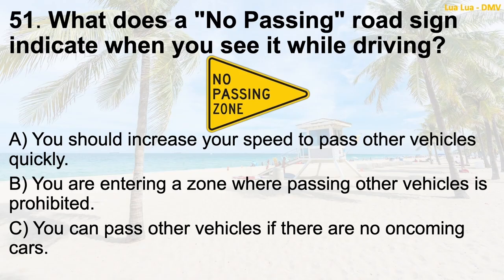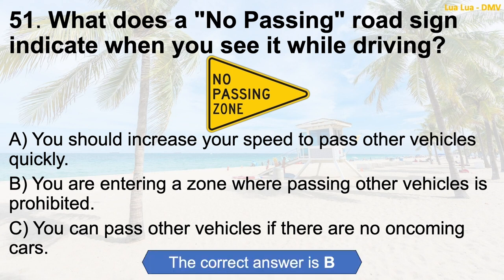Question 51: What does a no-passing road sign indicate when you see it while driving? A. You should increase your speed to pass other vehicles quickly. B. You are entering a zone where passing other vehicles is prohibited. C. You can pass other vehicles if there are no oncoming cars. The correct answer is B: You are entering a zone where passing other vehicles is prohibited.